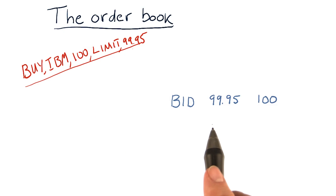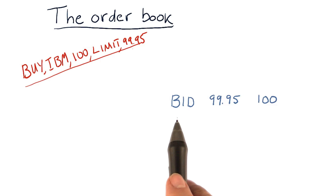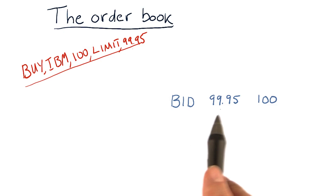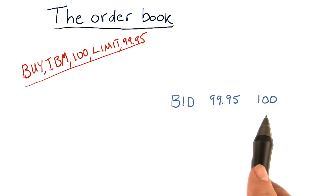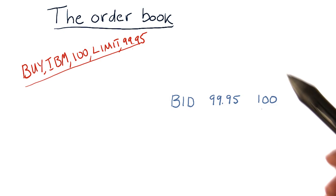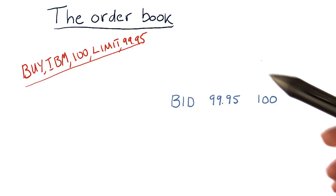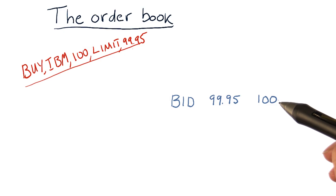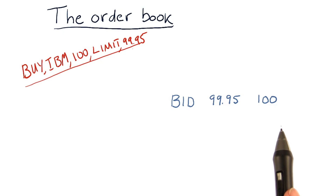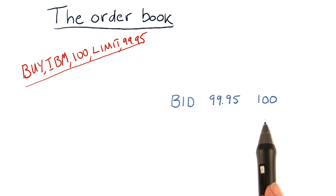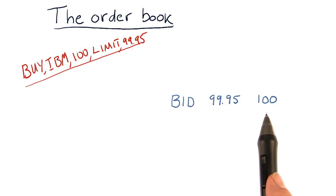Yours is the first entry in the order book, and it simply shows somebody has bid $99.95 for 100 shares of stock. And this is public knowledge — people can view this and see there's interest in buying shares of this stock. They don't know who has made this bid; the exchange knows that it's you, but they just see that there's interest in 100 shares.